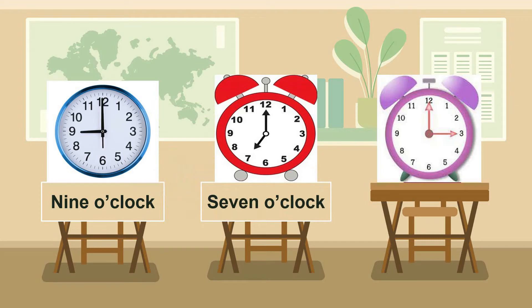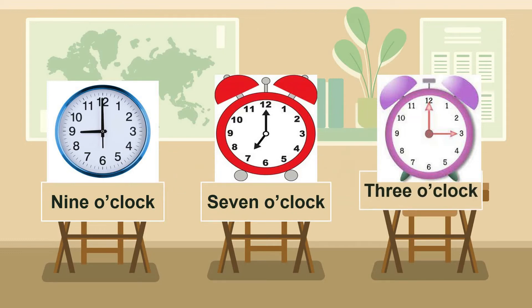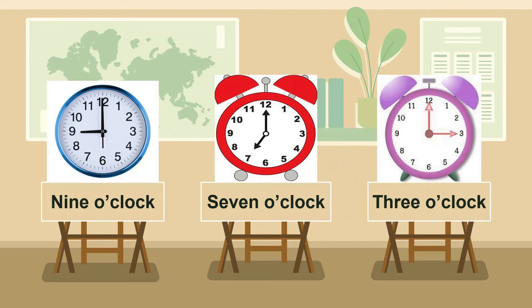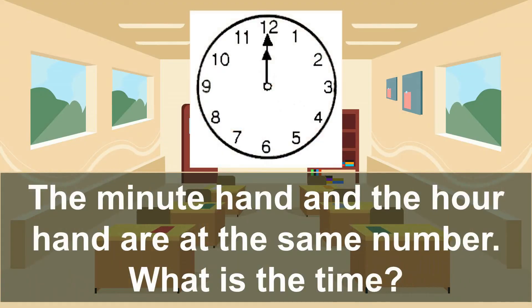Now look at the purple clock. What is the time? Of course, now you can read it — it is 3 o'clock. Good try! Remember pupils, when the minute hand is at 12, the hour hand will tell us the exact time.